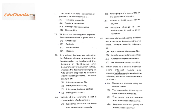Question 77: the most suitable educational provision for a slow learner is remedial instruction — extra classes for students who are lagging behind in their studies.